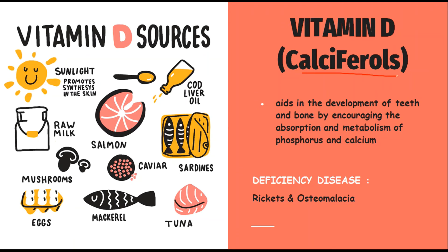Vitamin D, or calciferol, is another fat-soluble vitamin. The main source of vitamin D is sunlight — it promotes synthesis in the skin. Other sources are cod liver oil, caviar, salmon, raw milk, mushrooms, eggs, and tuna. Vitamin D aids in the development of teeth and bones by encouraging the absorption and metabolism of phosphorus and calcium in the body. Deficiency diseases caused by lack of vitamin D are osteomalacia and rickets.